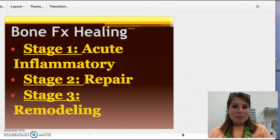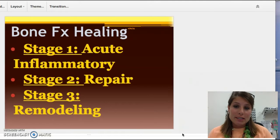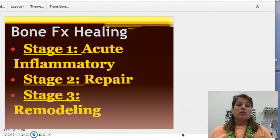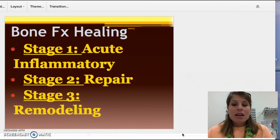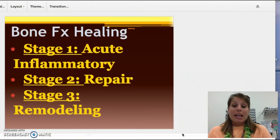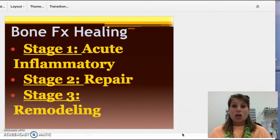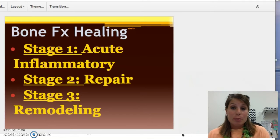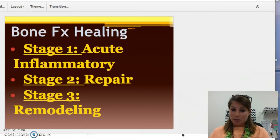Hi guys, we're going to pick back up on bone today. We're going to talk about the phases of bone healing and the types of injuries that occur. We're going to start on slide 18. One thing you'll notice is that the name of the phases of healing are the exact same, whether we're talking bone or whether we're talking soft tissue. So phase one is still acute inflammatory, stage two is repair, and stage three is remodeling.